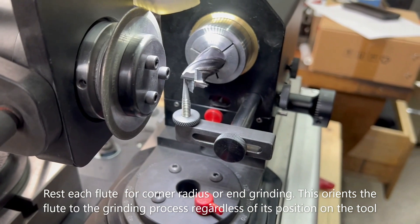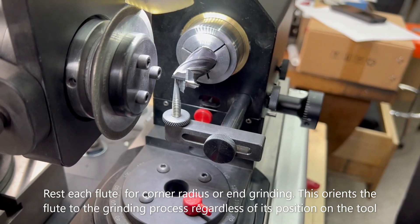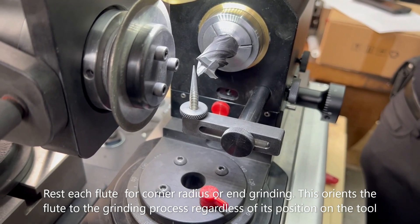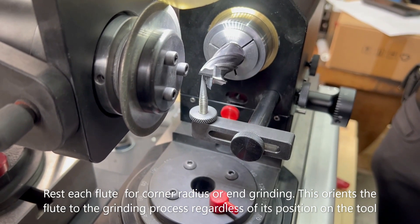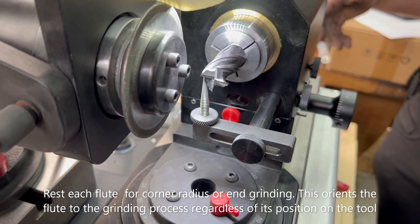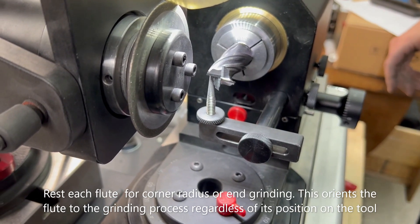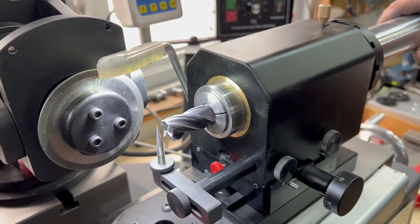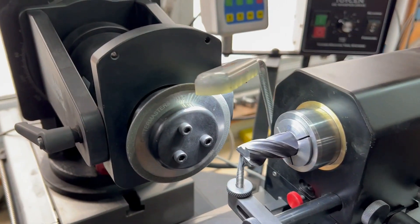What this means is it doesn't matter where the tooth is on the tool when it's in contact with the grinding wheel - it's all the same location because we're not using the indexing collar.